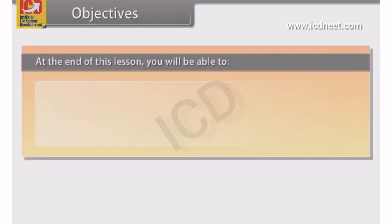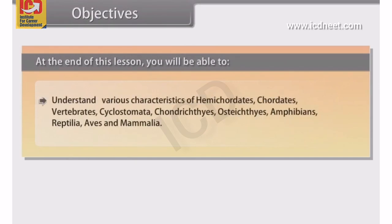Objectives: At the end of this lesson, you will be able to understand various characteristics of hemichordates, chordates, vertebrates, cyclostomata, chondrichthyes, osteichthyes, amphibians, reptilia, aves and mammalia.